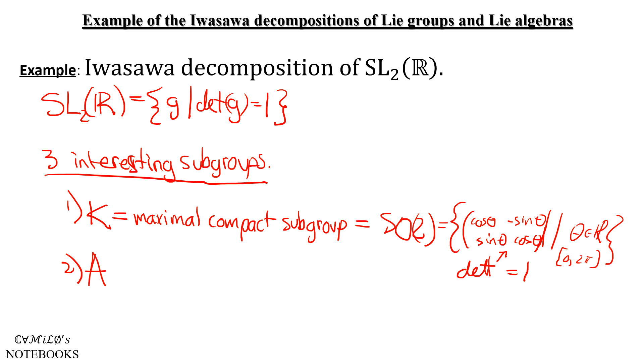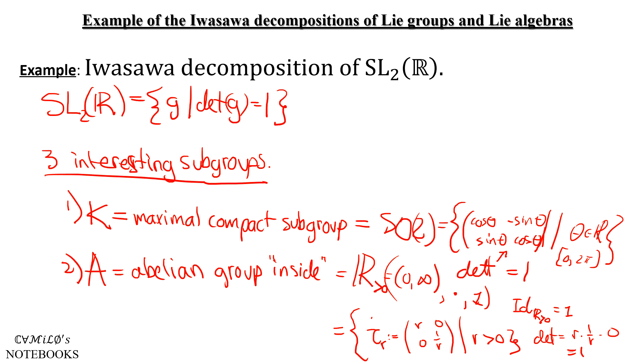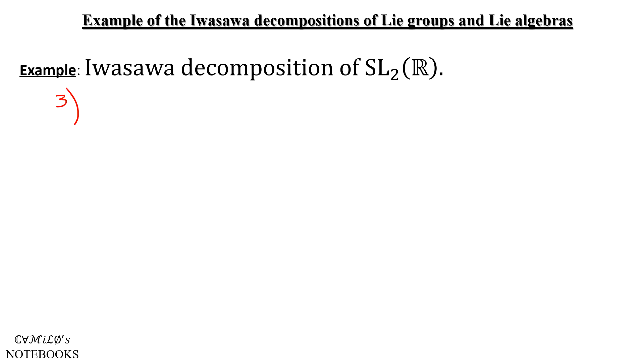Our abelian group A will be isomorphic to positive real numbers with multiplication, but specifically, it will be the set of matrices of this form. τ_R is (R, 0; 0, 1/R), where of course R is going to be positive here. Also note that these matrices have determinant 1.